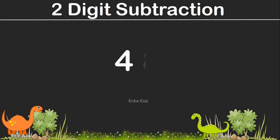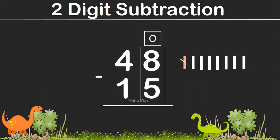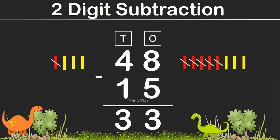In this example, we have 48 minus 15. On the one's position, we have 8 and 5. So let's draw 8 lines. Of this, we'll have to cut 5 lines. So remaining are 1, 2, 3. So 8 minus 5 is 3. Likewise, on the tenth position, we have 4 and 1. So let's draw 4 lines. Of this, we have to cut only 1 line. So remaining is 1, 2, 3. So 4 minus 1 is 3. So 48 minus 15 gives us 33.